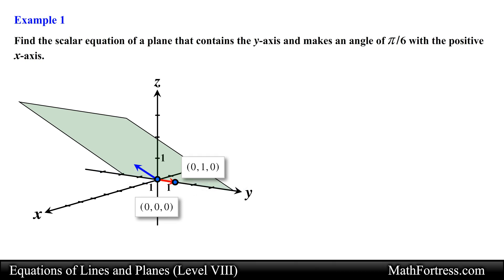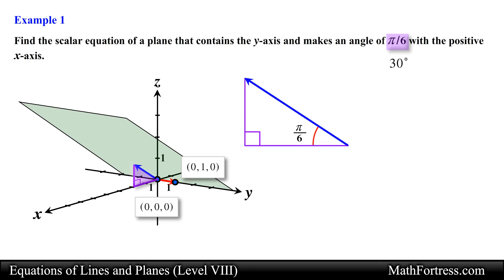Next we need a third point that is not collinear with these two points. We can use the fact that the plane makes an angle of pi over 6 with the positive x axis to determine a third point. Notice that pi over 6 is equivalent to 30 degrees, so the plane forms a 30-60-90 right triangle with the positive x axis. Using the special ratios of a 30-60-90 right triangle we can find the components of a vector that is on the plane and along the hypotenuse of this right triangle. In this case the vector will have an x component of root 3, a y component of 0, and a z component of 1.